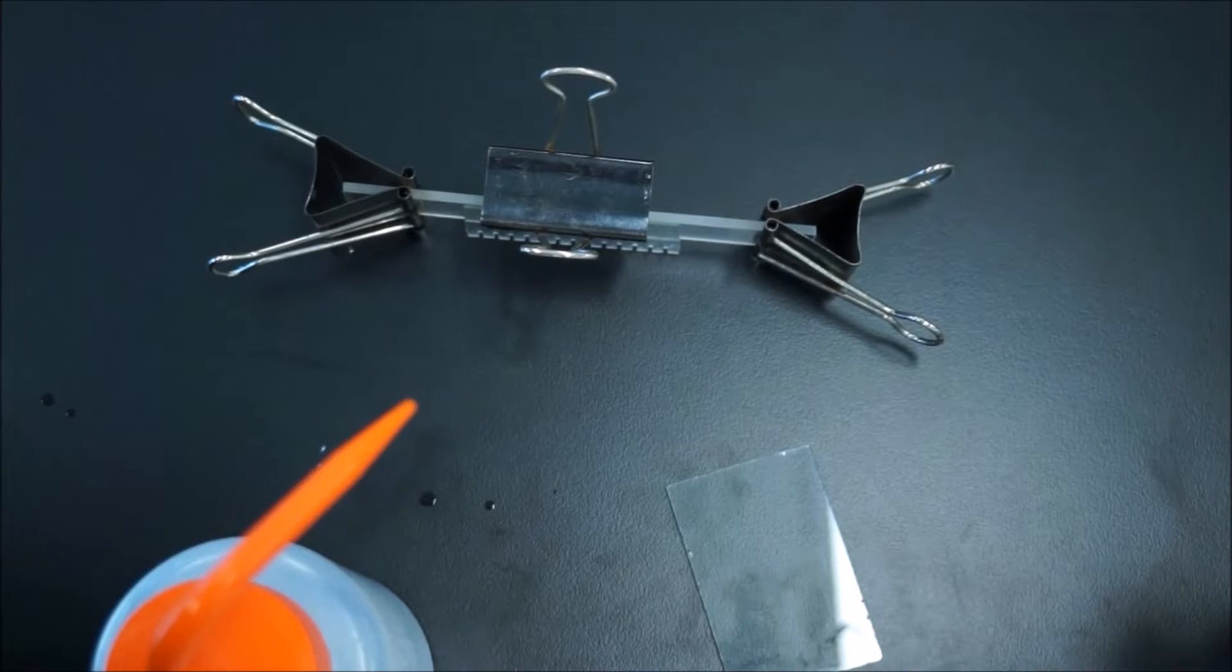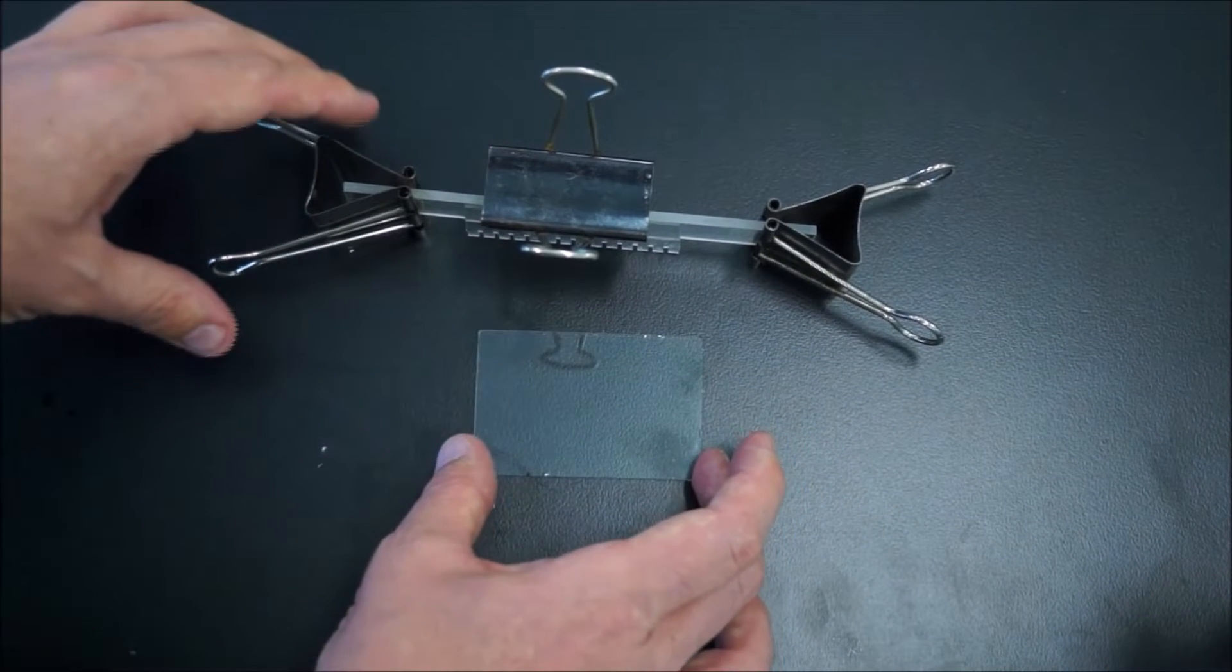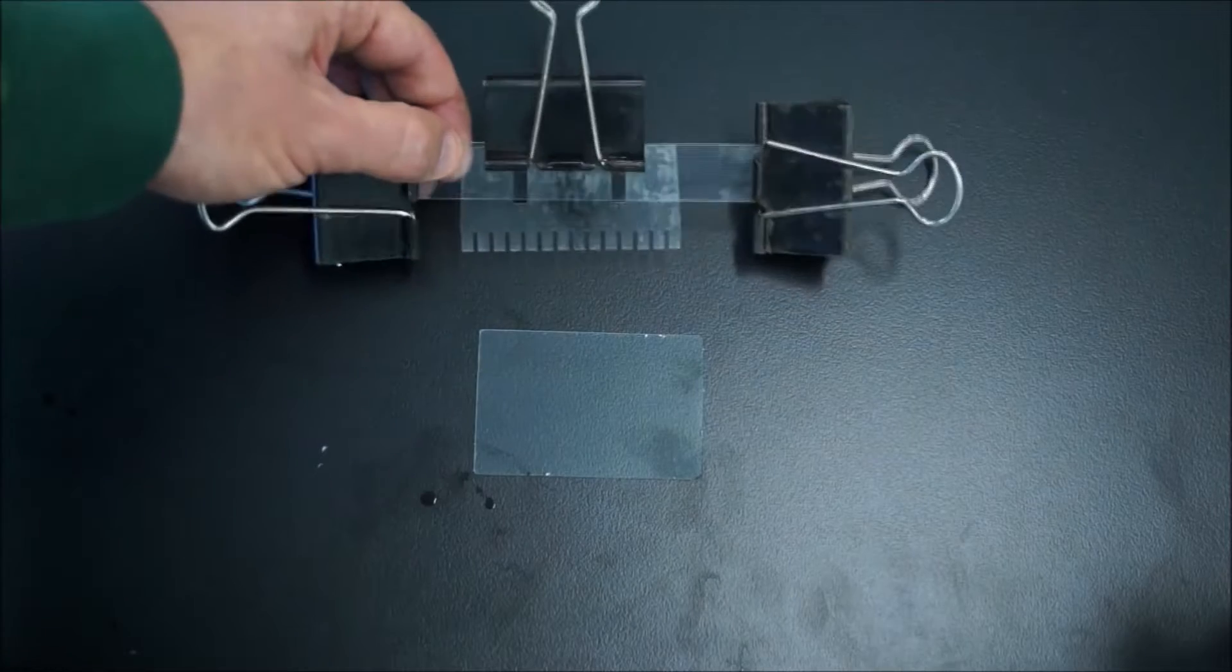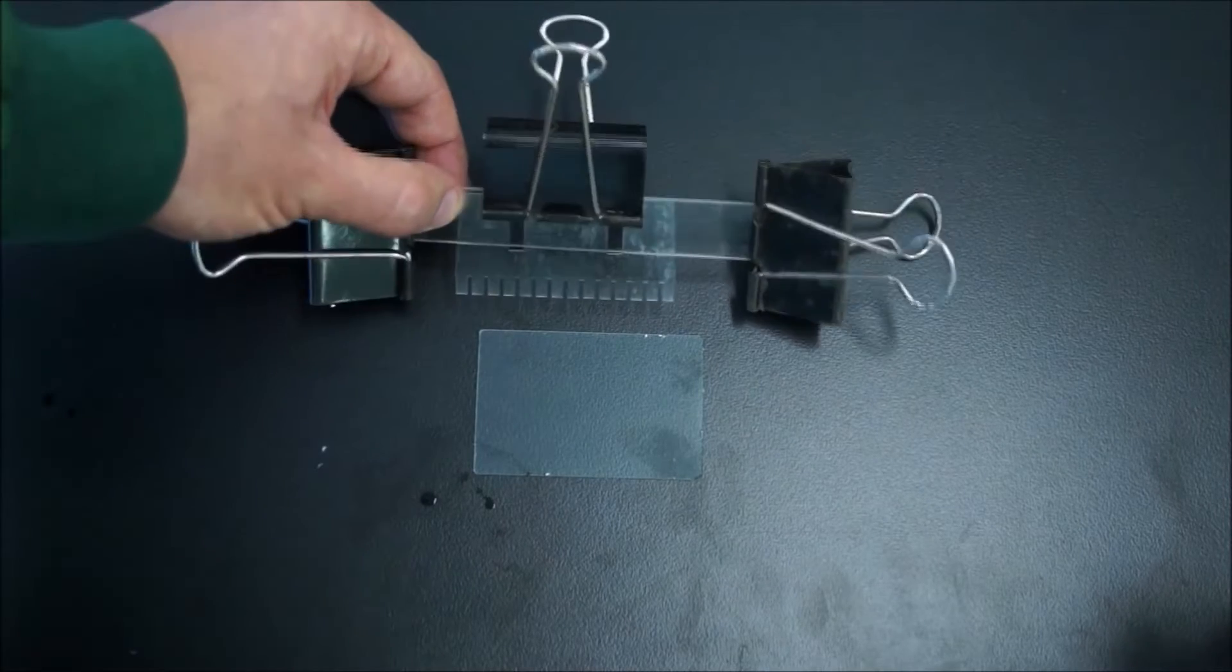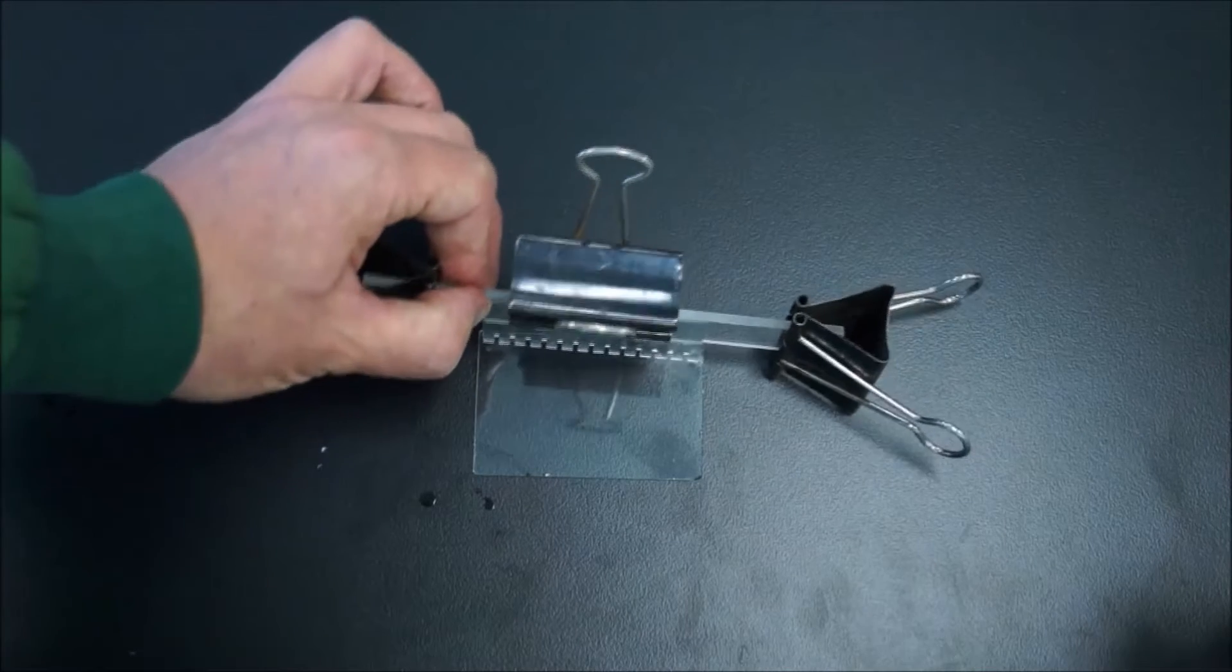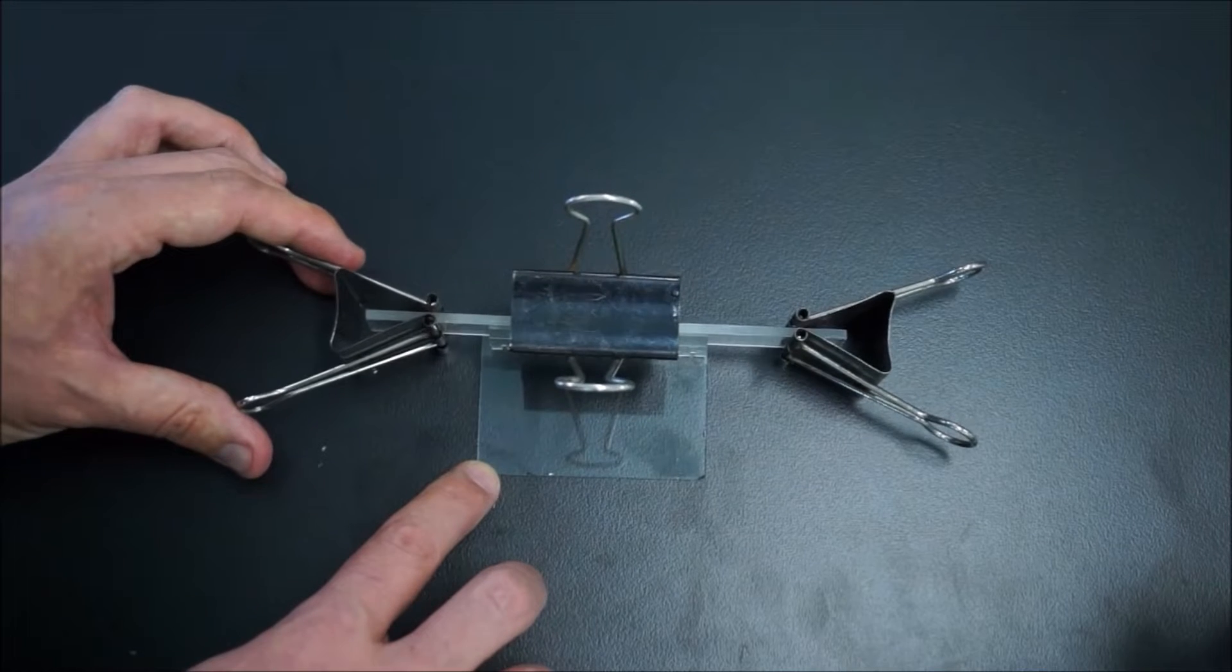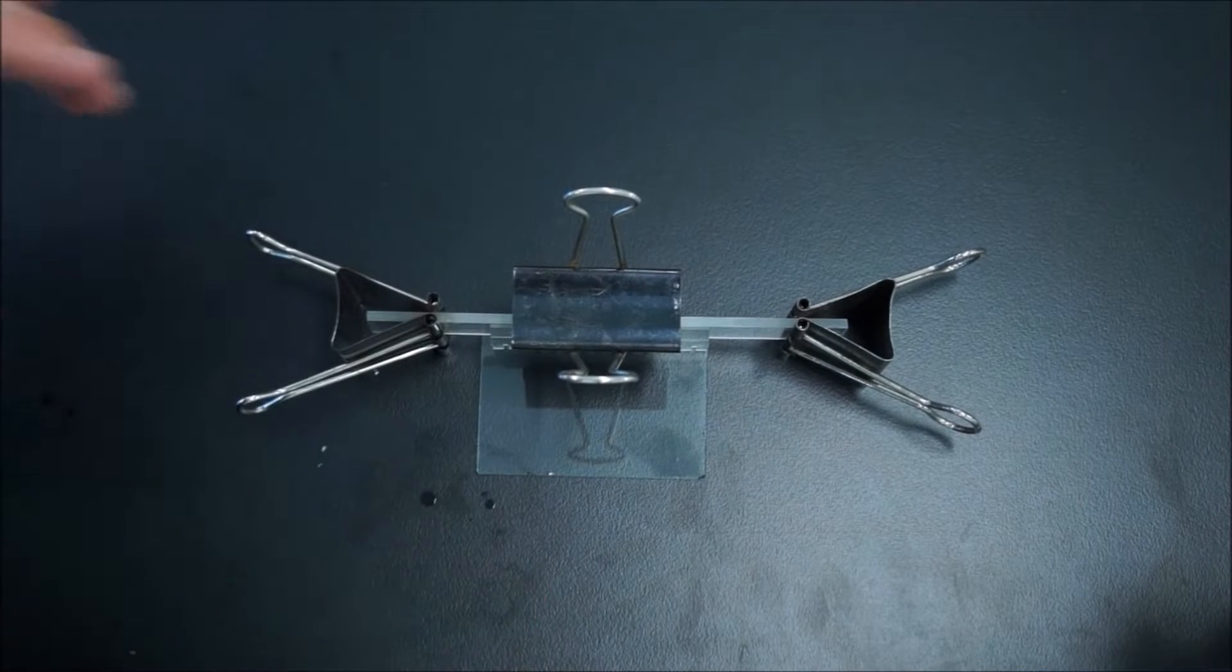Next thing you've got to do is carefully set it up so you can pour the gel. The comb's got to be placed so it makes depressions into the gel as it's setting. I'll show you how it looks from another angle.